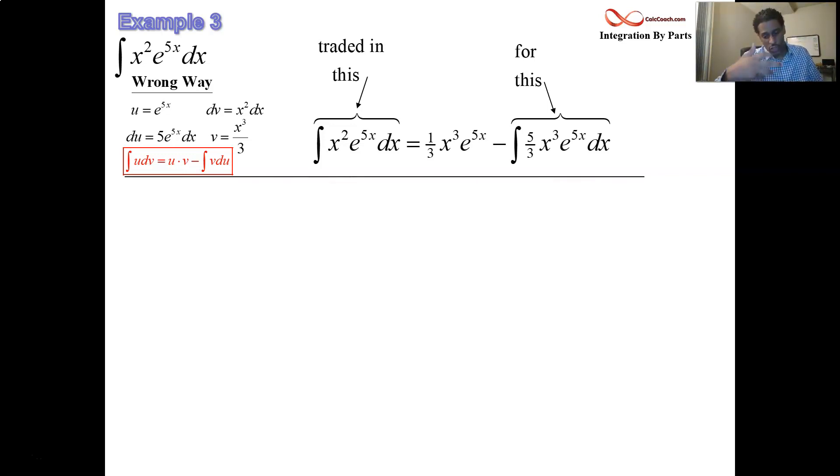The hierarchy says that you should let u be equal to the algebraic function in the absence of log and inverse trig. And so we have our algebraic function x squared. That should be what u is. The derivative of that is 2x dx. The integral of e to the 5x looks just like the derivative. It still has that same guy in it, e to the 5x. But there's a 1 over 5 out front.